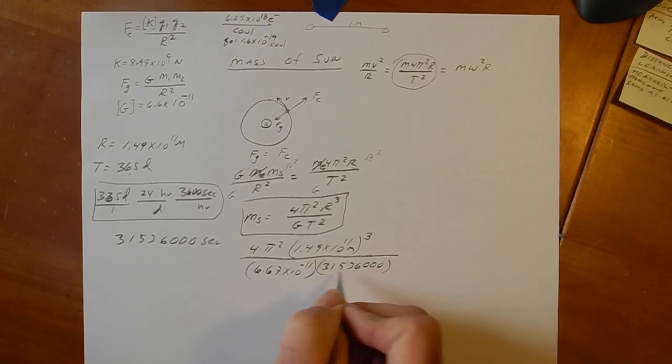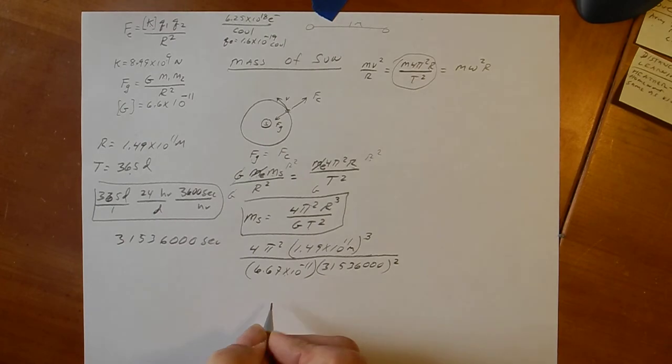But then square it. And now it made it even smaller. But the mass of the sun is equal to, if you do this, 1.96 times 10 to the 30th kilograms. That's a lot of mass.